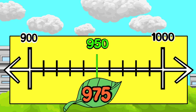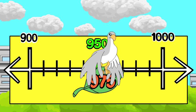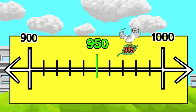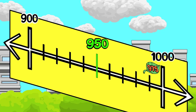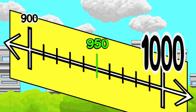975 is greater than 950, so to the nearest hundred, 975 rounds up to 1,000.